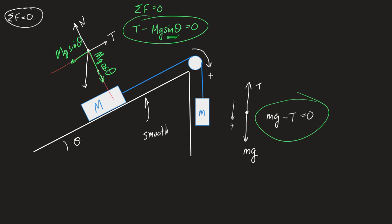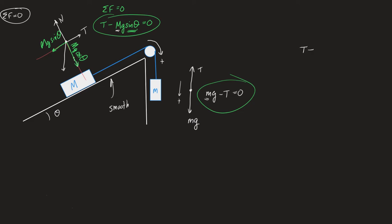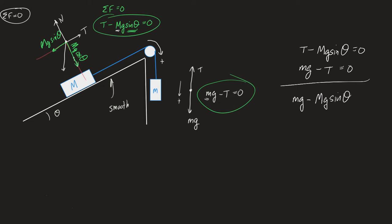Although you may not see where to go without numbers, in this problem the numbers are capital M and lowercase m. The five-kilogram block is capital M, the two-kilogram block is lowercase m. We're trying to get a relationship involving the angle, so we want to eliminate tension. I'll add those two equations together — stack them — and when you add them together the tensions cancel out. We get mg minus Mg sine theta equals zero.